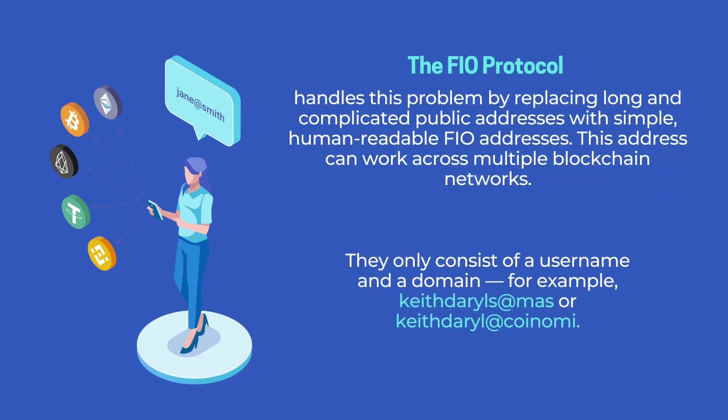The PO Protocol handles this problem by replacing long and complicated public addresses with simple, human-readable PU addresses. This address can work across multiple blockchain networks. Similar to an email address, PU addresses are easy-to-read wallet identifiers for sending and receiving crypto.